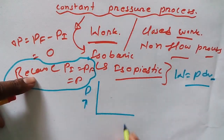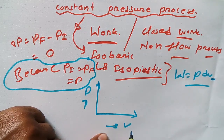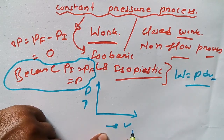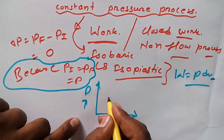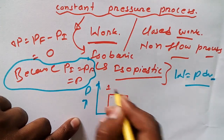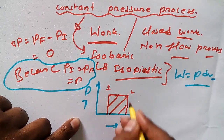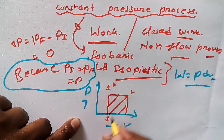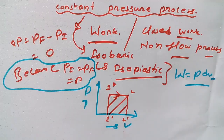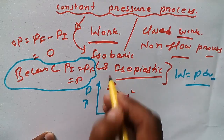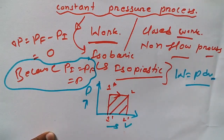Now let me draw a PV diagram. On this diagram, P is pressure and V is volume — do not confuse V with velocity. For this constant pressure process, the pressure remains constant from state 1 to state 2, so the process appears as a horizontal line.